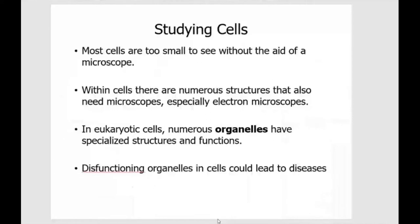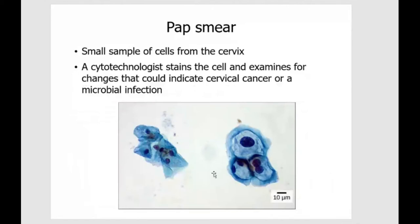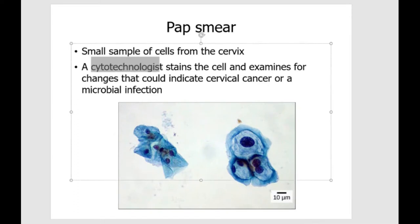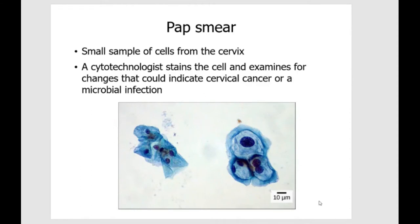The next slide talks about how small cells are, and we can't really study them with our naked eye, so we have to use microscopes. This picture is interesting because you can actually tell a lot by just looking at the morphology of cells. Your textbook mentions the type of job called cytotechnologist. Cytotechnologists will prepare and look at cells, and they can spot abnormal cells, which is probably an indication of certain diseases.